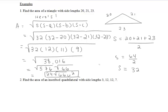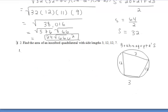I'd like you to try number two on your own now that we just did the first example together. Pause the video, work out problem two, and once you're ready to compare your answer with mine, hit play. For number two, you should recognize we're given an inscribed quadrilateral, so we should be thinking about Brahmagupta's formula.